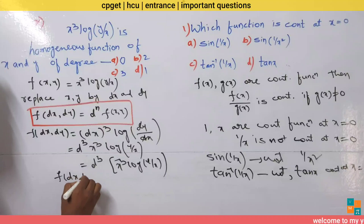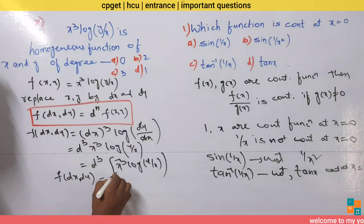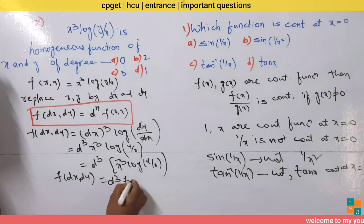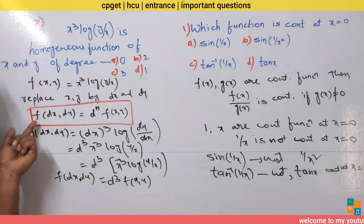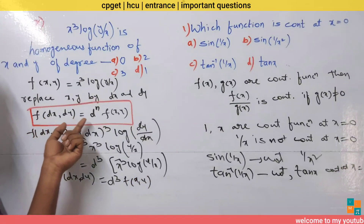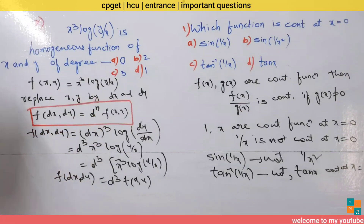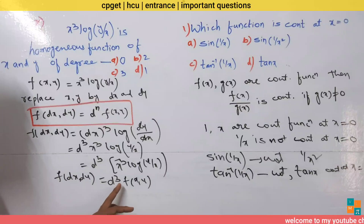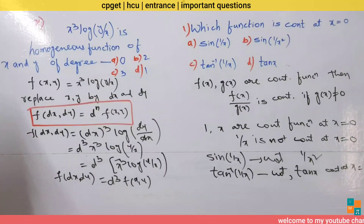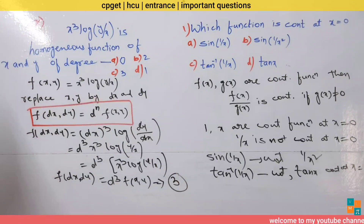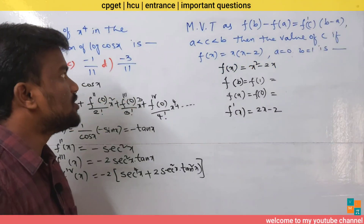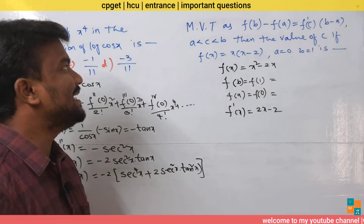From this, f(dx, dy) equals d³·f(x, y). Comparing with the formula f(dx, dy) equals d^n·f(x, y), we observe that n equals 3. So the degree of the homogeneous function x³·log(y/x) is 3.